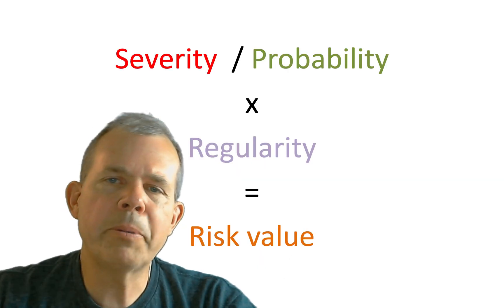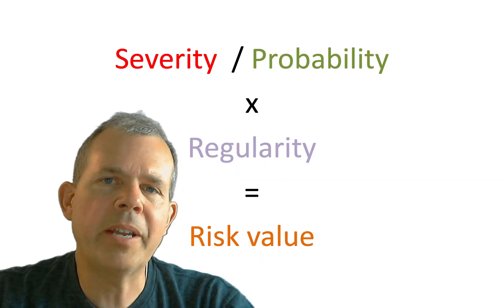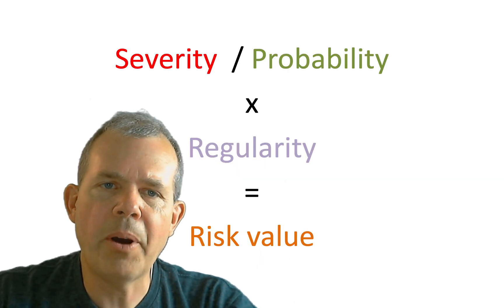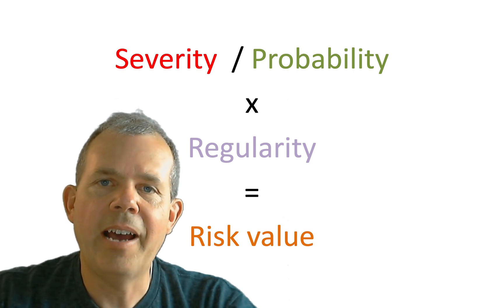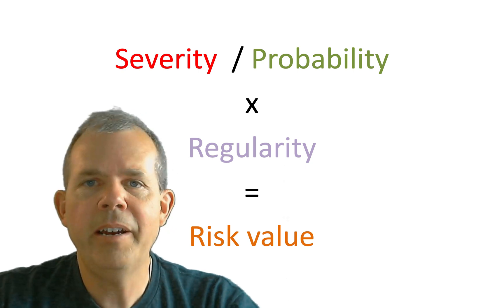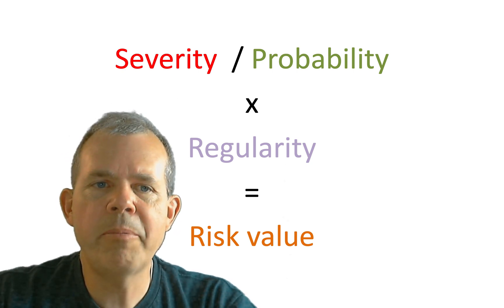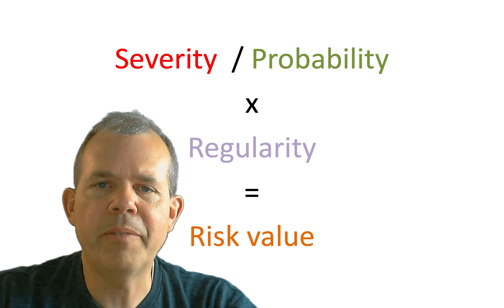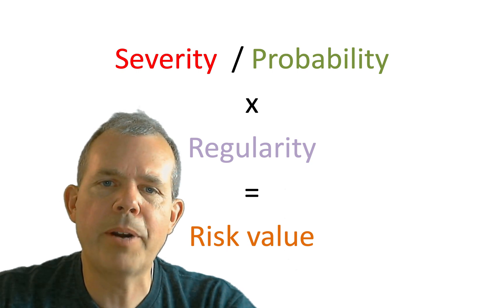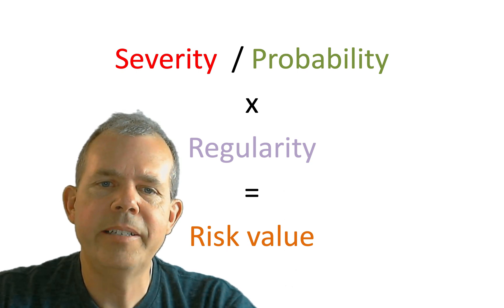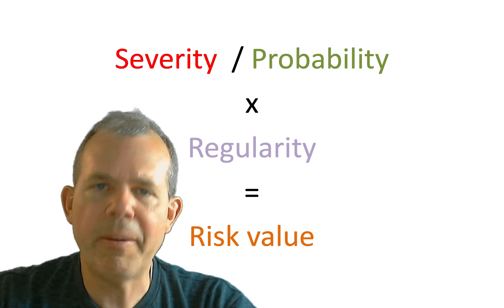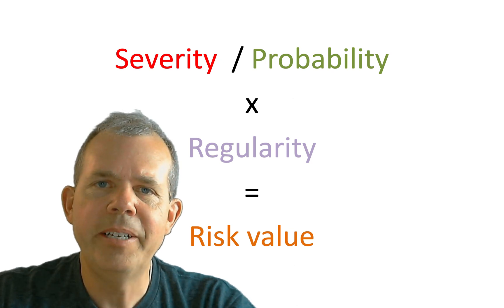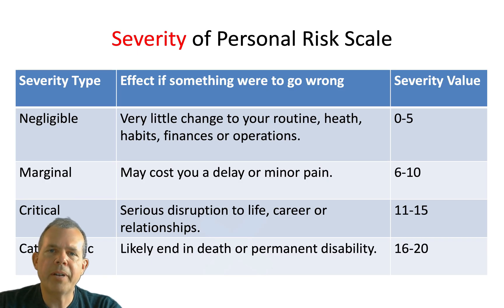The purpose of this video is to give you a guideline when your boss asks questions like 'how often?' and 'how probable?' We have a formula: severity divided by probability times regularity, and that will give us our risk value. To come up with a better answer, we need to define numbers and a scale.